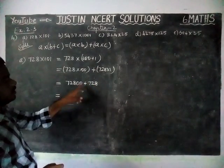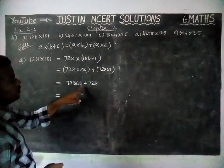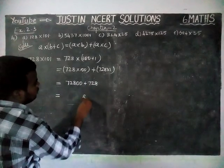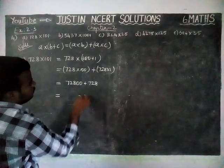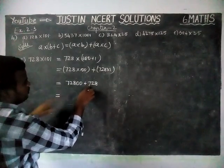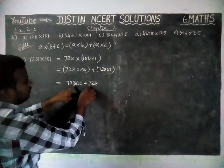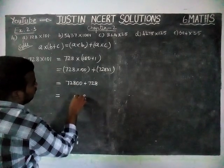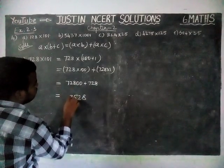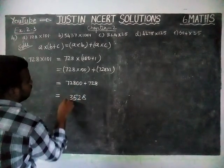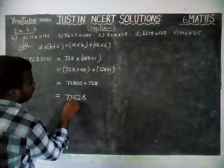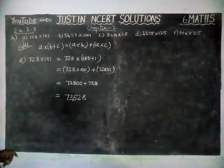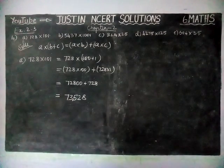Now we are going to add those numbers. Ones place is 8, tens place is 2, hundreds place: 8 plus 7 is 15 — carry 1, then 2 plus 1 is 3, and here 7. So the answer is 73,528.